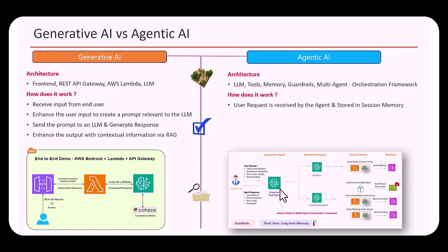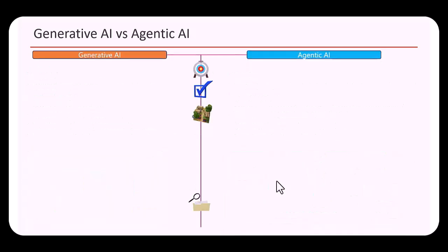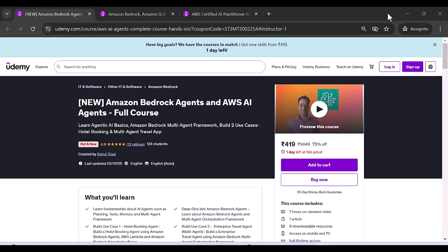In an agentic application, a user sends a request to an agent. The agent breaks down the task into multiple steps and uses its tools — such as a Lambda function or a Bedrock knowledge base — to retrieve data from backend systems. Once it gets responses back, it consolidates that input and sends the final response back to the user.